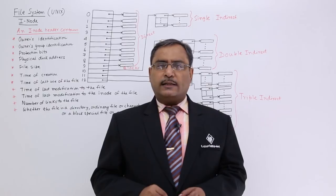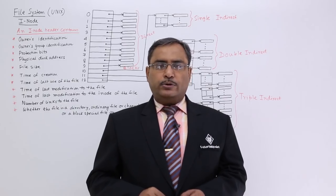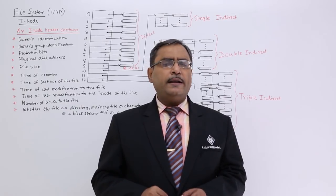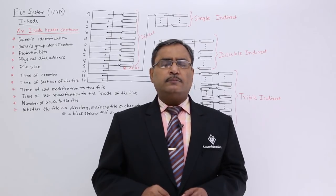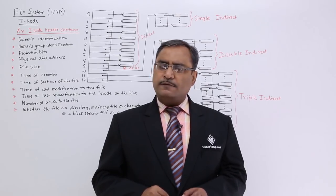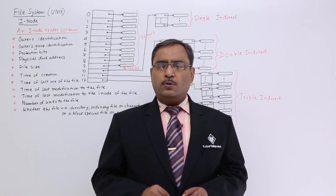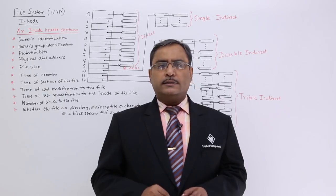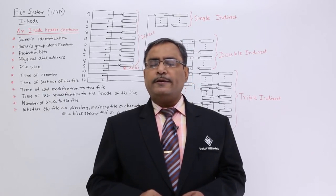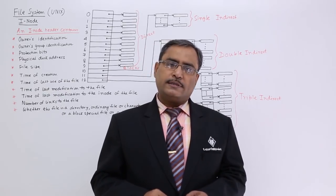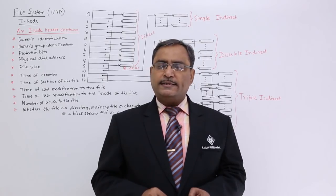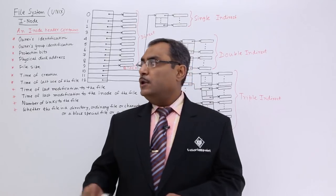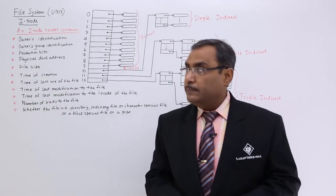Inode is nothing but a data structure which has a header containing plenty of information, and 13 fields which contain some direct, single indirect, double indirect, and triple indirect block addresses. What are the different fields existing in the header part of the inode? Let me discuss them one by one.